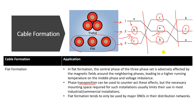Since all cables in the flat formation are separate, phase transposition helps reduce the imbalance effect. However, the flat formation requires more space for installation, so it is very limited in low-voltage industrial and commercial installations — those typically use the trefoil formation, or more commonly, a single multi-core cable instead of three separate cables. The flat formation is mainly used by distribution network operators (DNOs) in their distribution networks. The next lesson will cover the derating factor in cables due to formation.